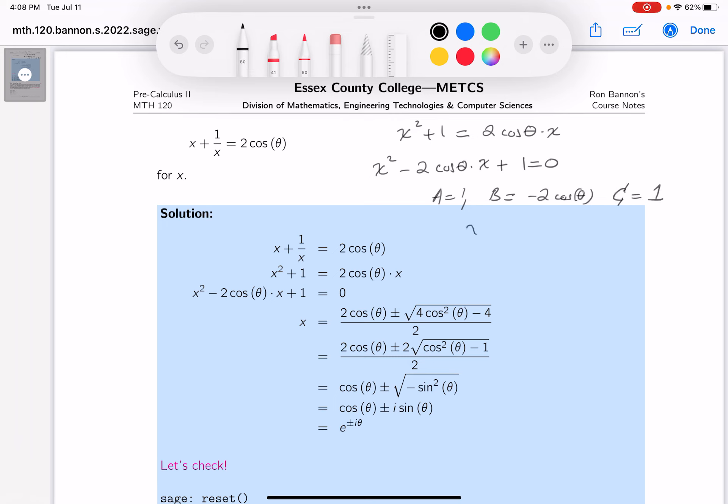Using a quadratic formula, x equals, let's just carefully write this down, the opposite of b, plus or minus b squared minus 4ac over twice a. Let's go through that. Again, I'm solving for x. What's the opposite of b? It's 2 cosine theta. All right, plus or minus. What's the b squared? It's 4 times 1, which is 4. So minus 4 over twice a, which is 2.